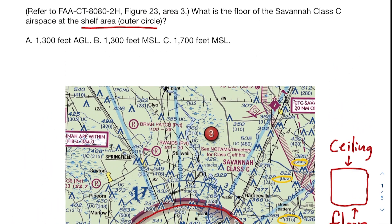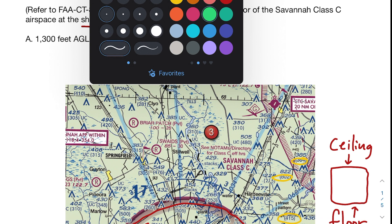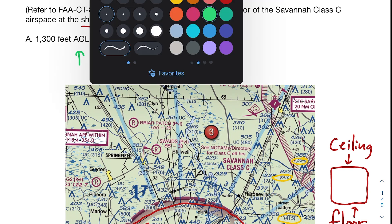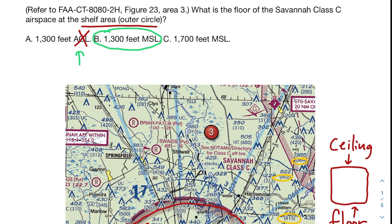So let's go ahead and compare to our answer choices. Yes — the answer to this one is B. A is incorrect because the only difference between A and B is that A says AGL and B says MSL, and as I said, that number is MSL, not AGL. C is also incorrect — we've got the right measurement type but not the right altitude. So in this question, the correct answer is B.